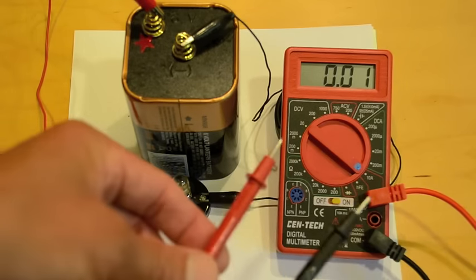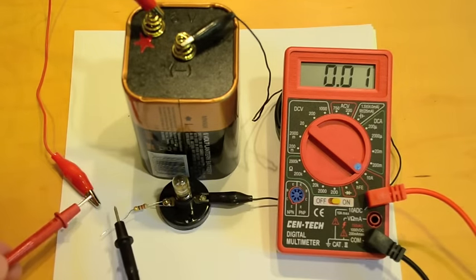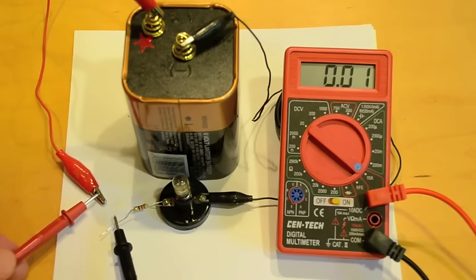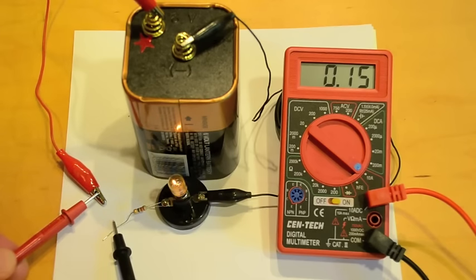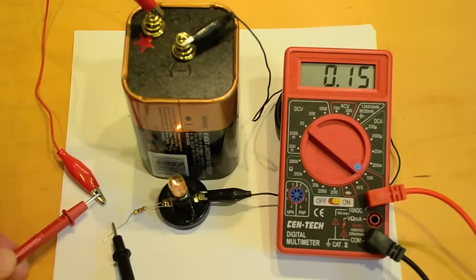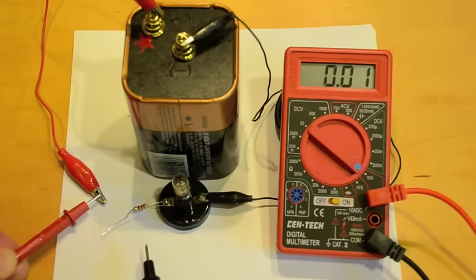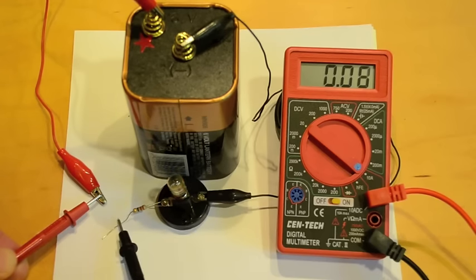So as you can see the light bulb is off. But if I touch the meter leads to here I get a current reading of 0.15 amps. And the light bulb turns on. If I break the circuit by moving the probe lead off, no current.